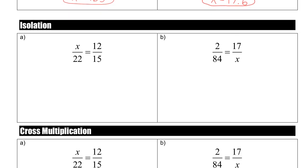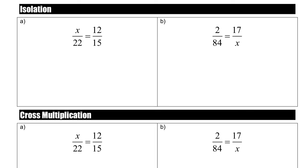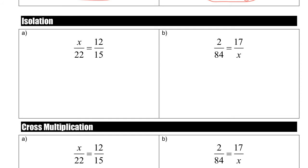If you go down your page, you can find the next method, isolation. So what I mean by isolation is getting the variable completely on its own. The variable is the number we want to solve.